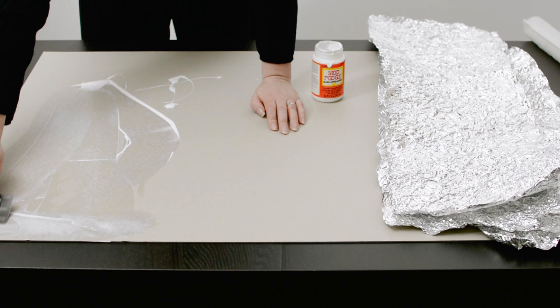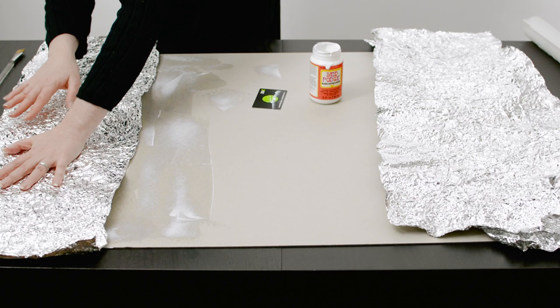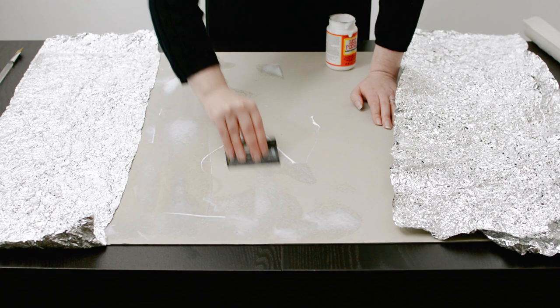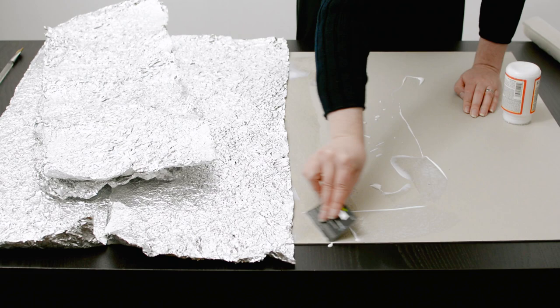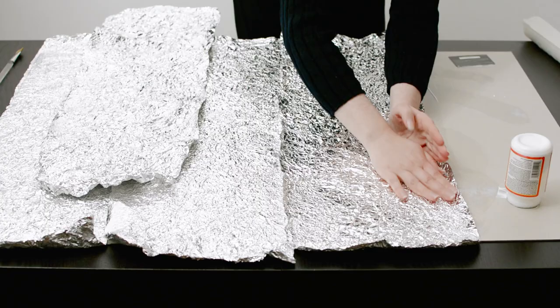Once I've scrunched all the tin foil up I then spread out my Modge Podge as I'm doing here and I'm using an old discount card. You can use an old credit card and the Modge Podge then glues the aluminium foil to the cardboard. Now you can use hot glue or any adhesive that will work for you in this case. What this is doing is providing us the base and the texture of our backdrop.